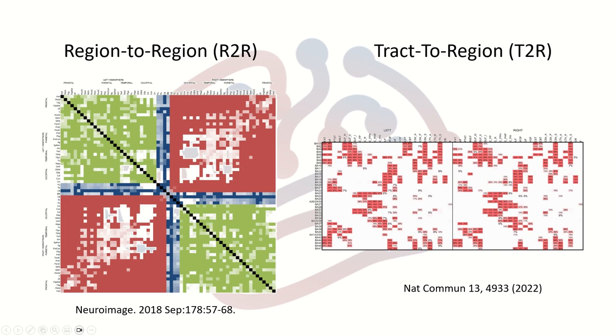A brief introduction here about the tract-to-region connectome and its difference from the conventional region-to-region connectome. On the left-hand side we see the conventional region-to-region connectome. Usually this will be presented by a square matrix where the regions are listed on the vertical side and the horizontal side. For the rows and columns they are the same, and for each entry there will be a quantification of the connectivity for each region pair. That's the region-to-region connectome that has been used in most imaging fields, either using functional MRI or diffusion MRI tractography.